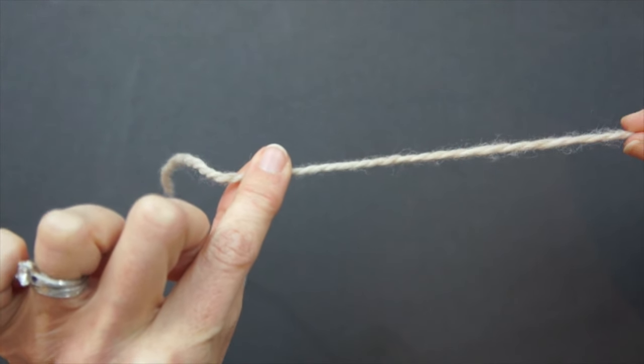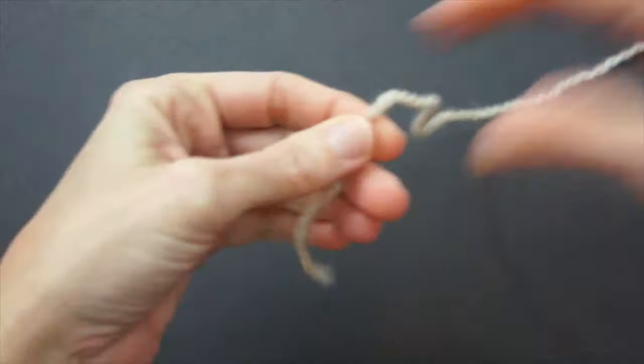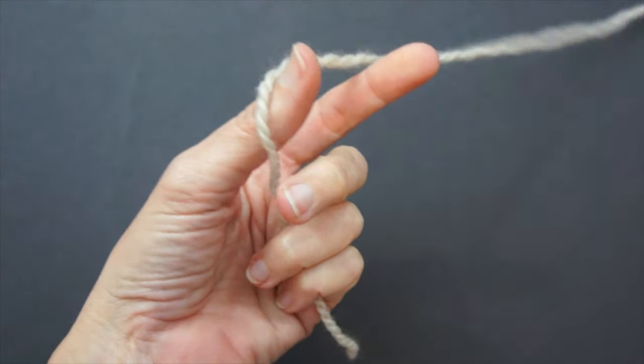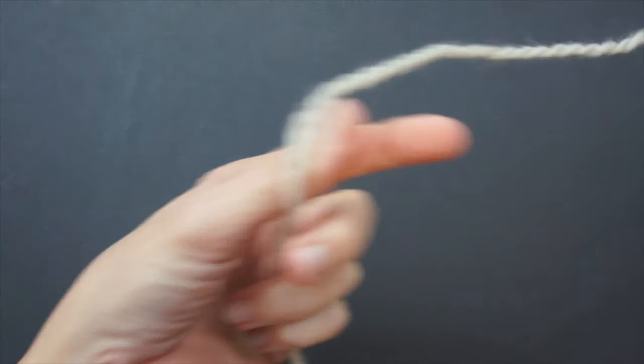This is a quick little video to make a center pull ball. Sometimes we pull out of the center skein and we get what we call yarn barf, which is that big amount of yarn that comes out.